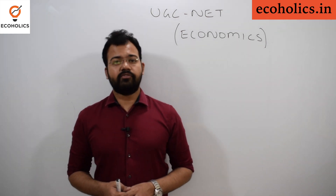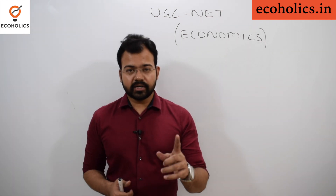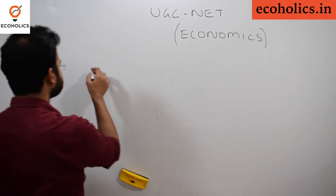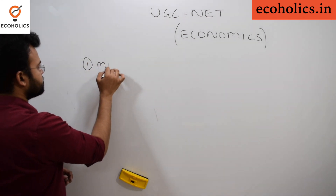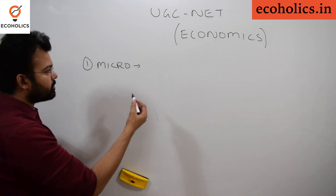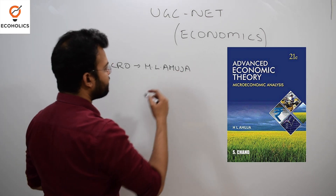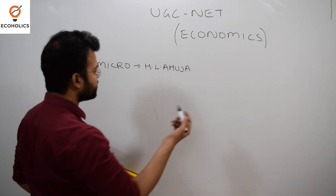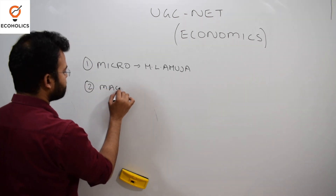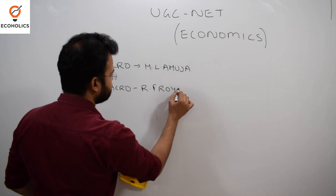Looking at the new syllabus divided into 10 parts, the first part is microeconomics. For microeconomics, the best book is Advanced Microeconomics by H.L. Ahuja. This book is very important and covers the concepts you need for this section.